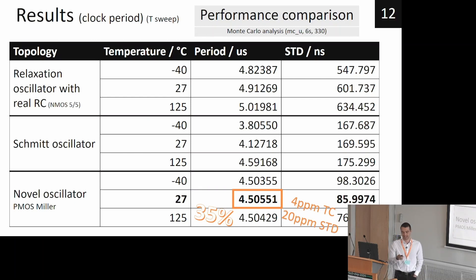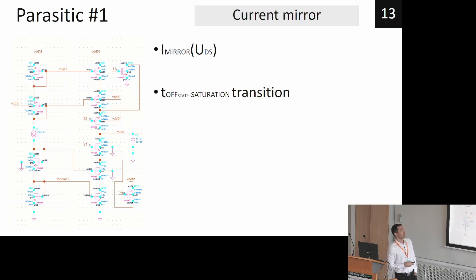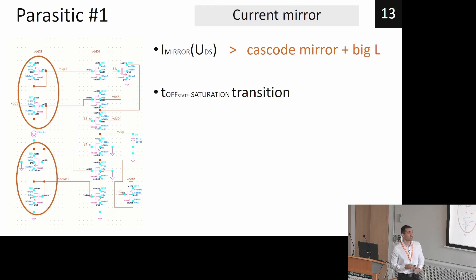temperature coefficient. So where does this discrepancy come from? The first parasitic is current comes from current mirror. We fix the characteristics by using cascode and long transistor channels. And there we have also parasitic of on-off transition, which was fixed by